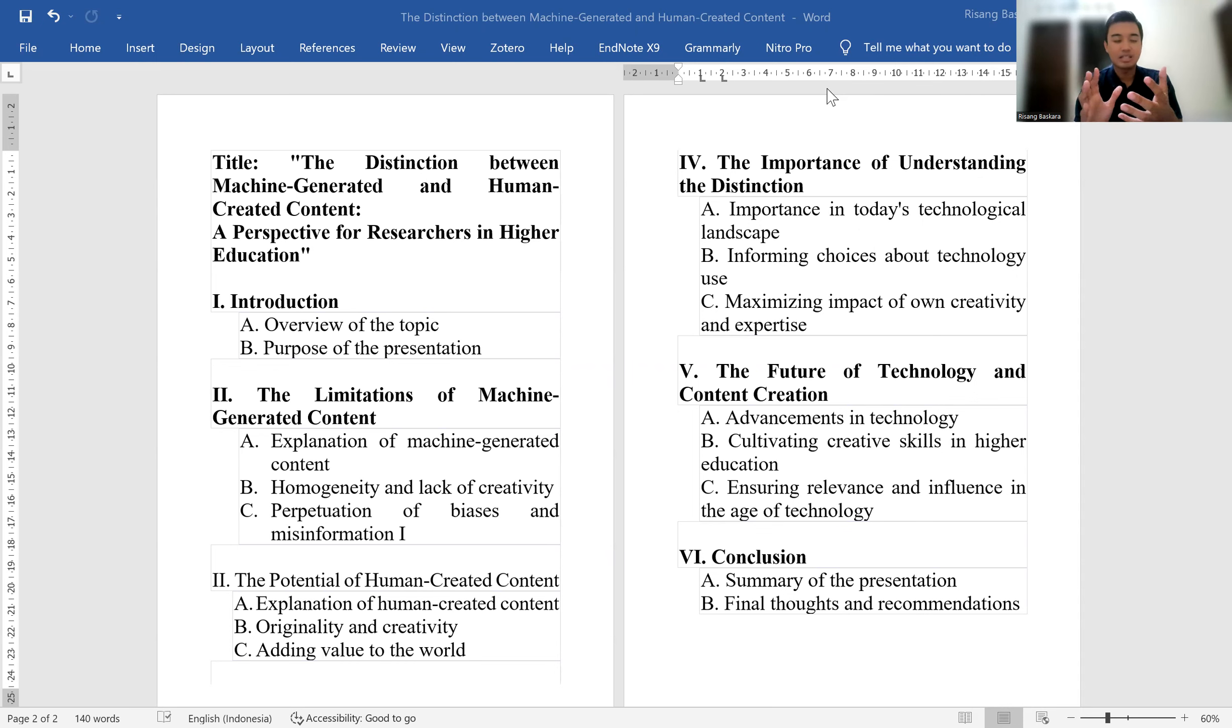While machines like ChatGPT are capable of generating vast amounts of content, they do so based on the data they have been trained on and the algorithms they employ. This results in a certain homogeneity and lack of creativity in the content produced. Furthermore, machine-generated content can sometimes perpetuate biases and misinformation. As researchers in higher education, it is crucial to be aware of these limitations when evaluating the usefulness and trustworthiness of such content.